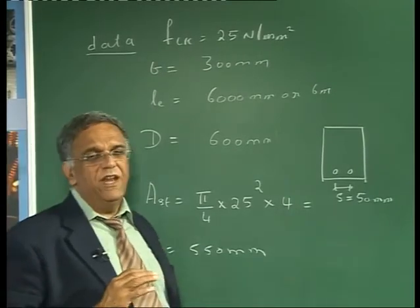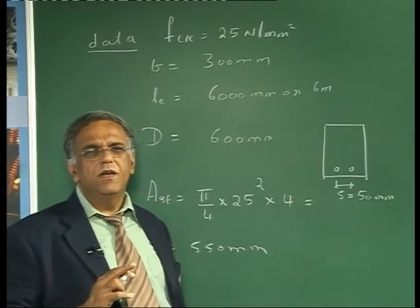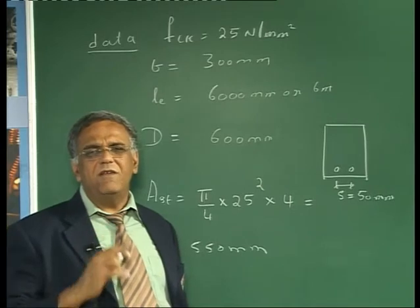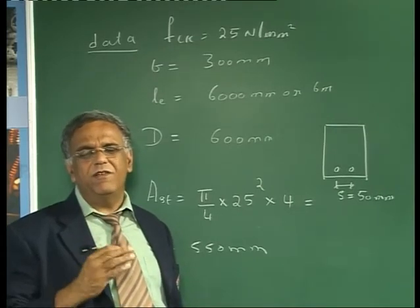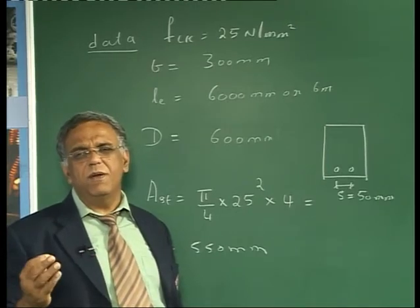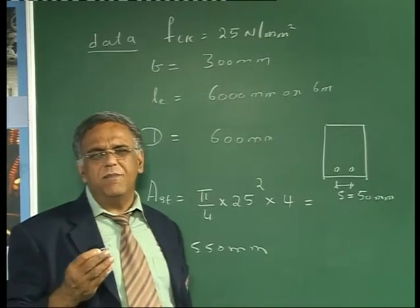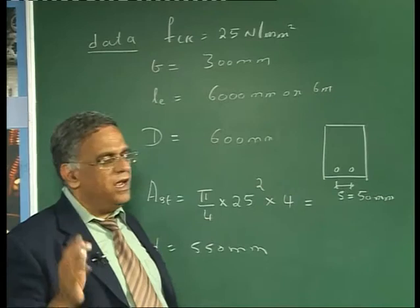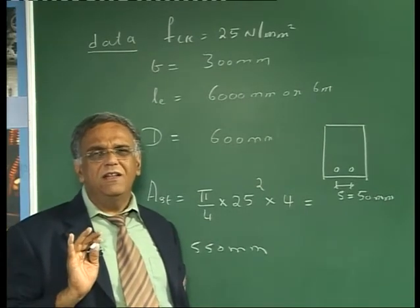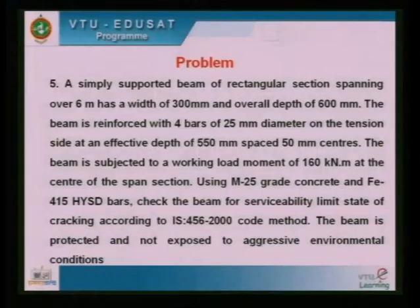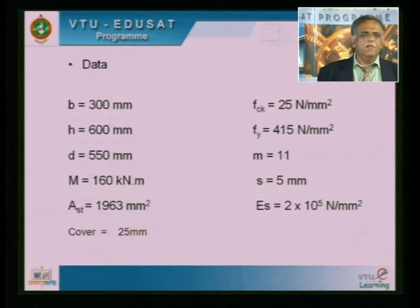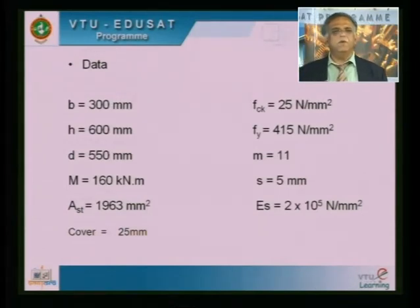Now we must use the theoretical method to check crack control. We calculate the actual crack width that develops and compare it with the permissible crack width. The permissible crack width, for the environmental condition given, is 0.3 mm as per the code. The only job left is to calculate the actual width of the crack.